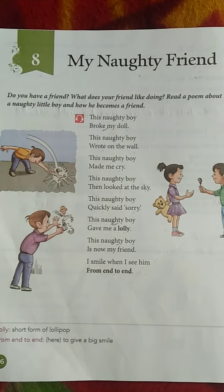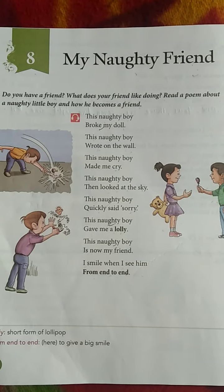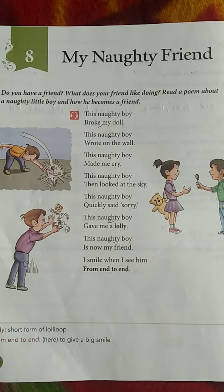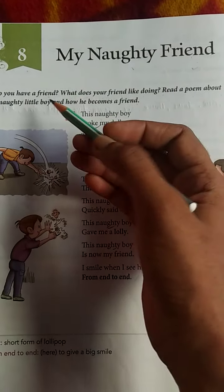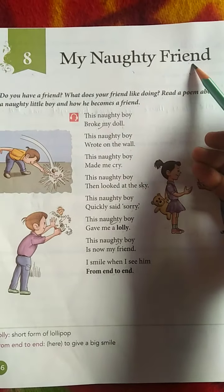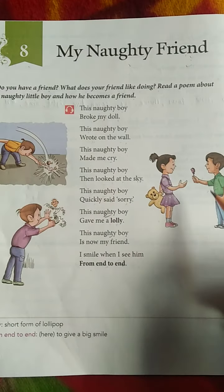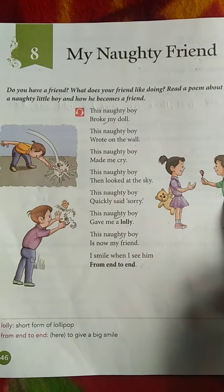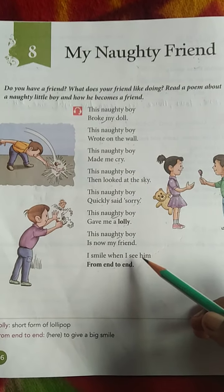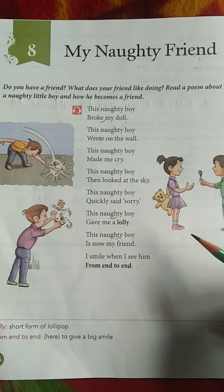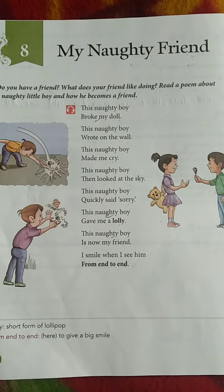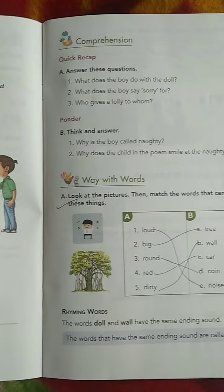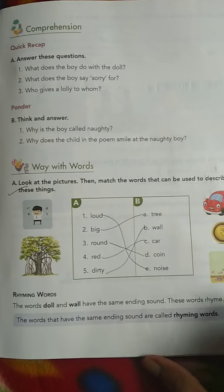Good morning class. This is your English literature book and yesterday we started chapter 8th, 'My Naughty Friend.' This is a poem about a naughty boy who became a friend of this little girl in the end. Yesterday we understood the poem, so today we will start the exercise of this chapter.